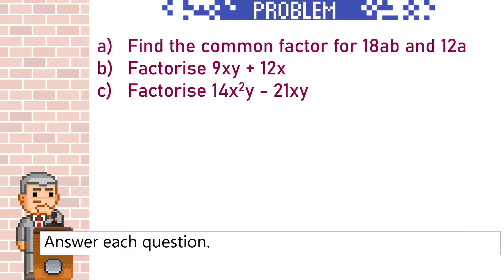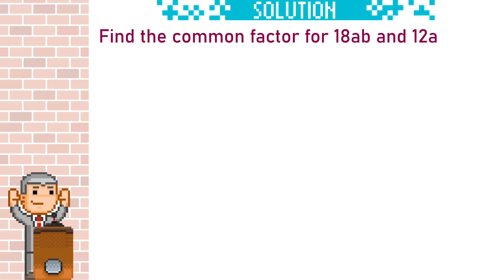Let's work through these questions. To find the common factor of 18ab and 12a, we need to first look at the numbers for each term. 18 and 12 are both in the six times table. The number common factor is 6.